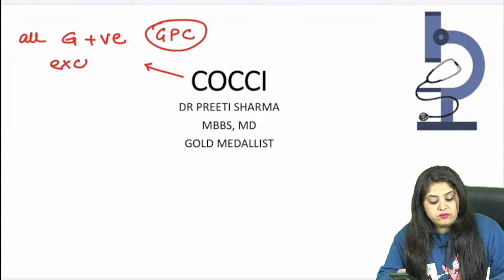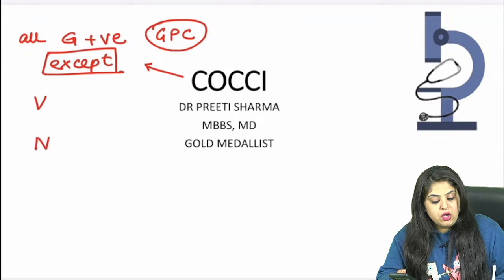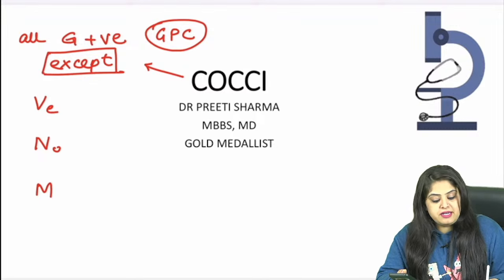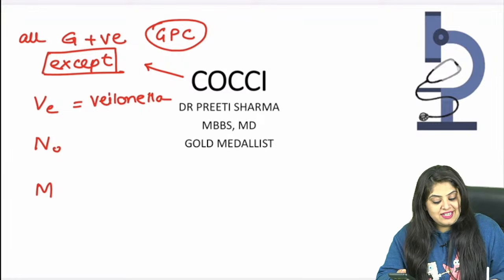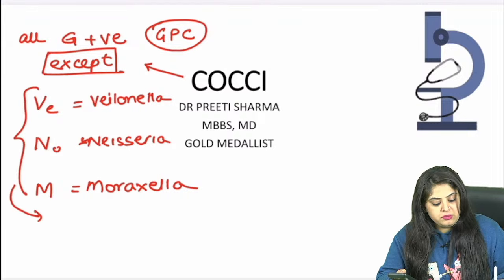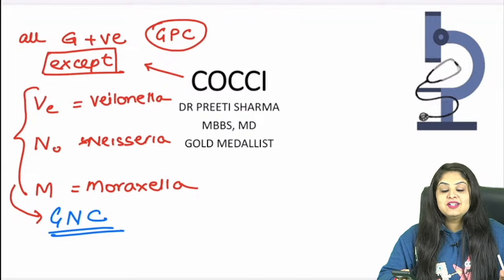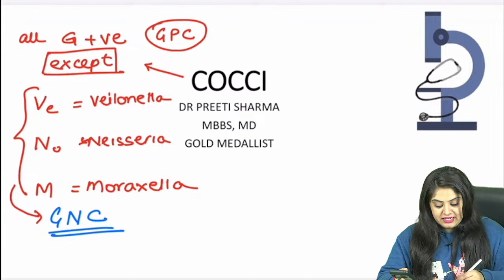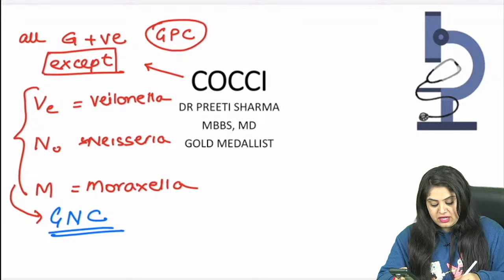The VENOM mnemonic covers the gram negative cocci exceptions: Veillonella — rarely questioned — Neisseria, which gets a lot of questions, and Moraxella. These three cocci are the exceptions, meaning they are gram negative cocci. Now we can start with Question 1.